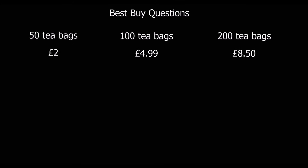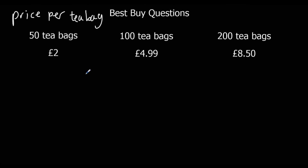See if you can give this one a go — tea bags. We're going to do price per tea bag, so price divided by how many tea bags. 200p divided by 50 tea bags gives 4 pence per tea bag.